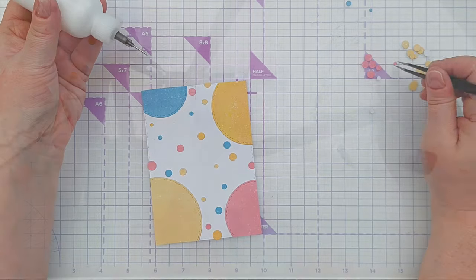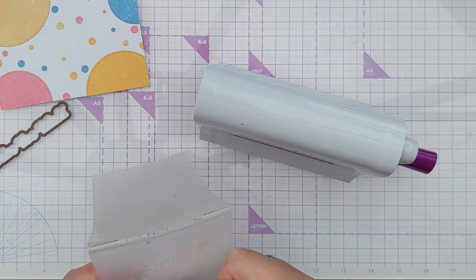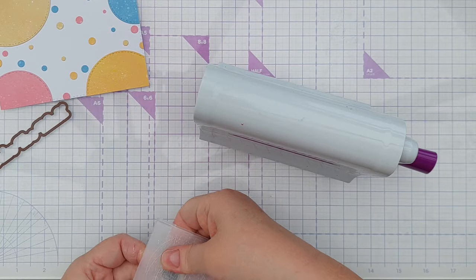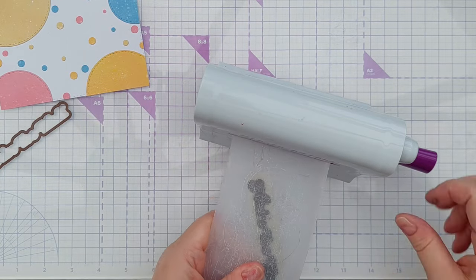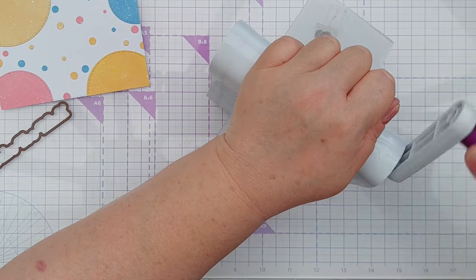For the sentiment I die cut the words from gold glitter cardstock. This cardstock isn't a particularly bright gold; it's quite a nice subtle champagne gold which I really enjoy.